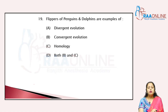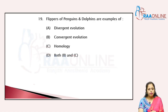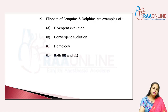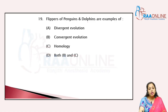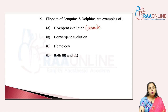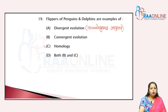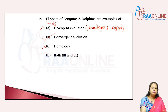Flippers of the penguin and the dolphin are examples of analogous organs — similar functions but different structure. Analogous organs follow convergent evolution, not divergent evolution. Divergent evolution is related with homologous organs. So the answer is convergent evolution, because the flippers are examples of analogous organs.